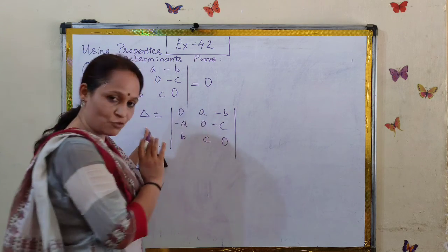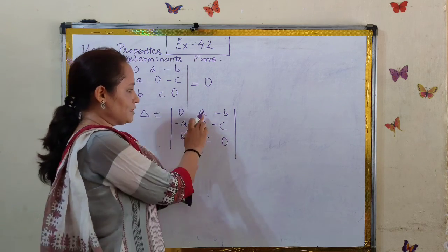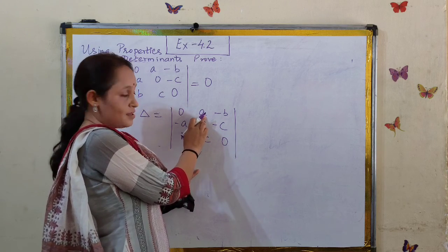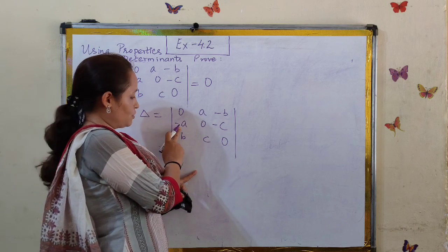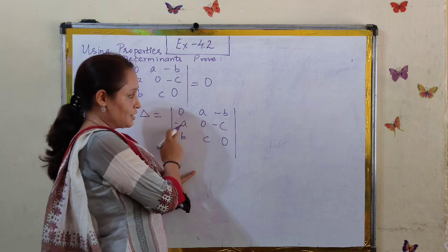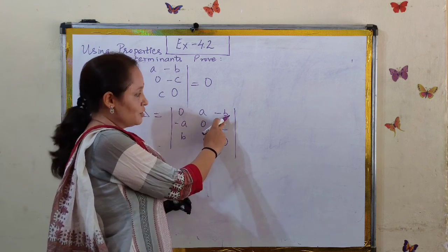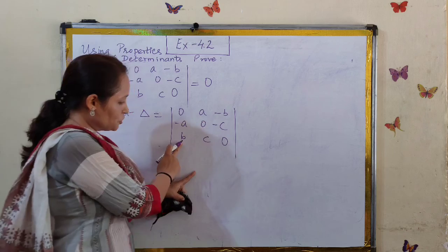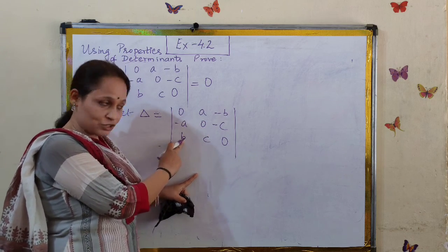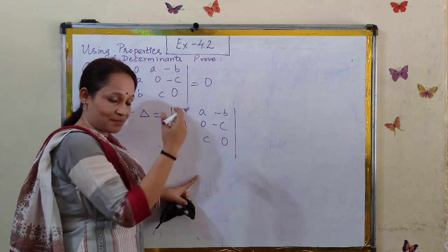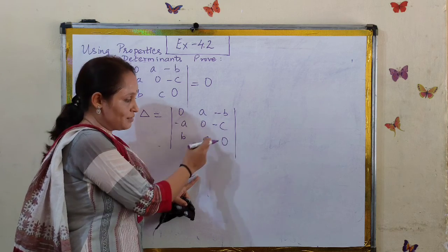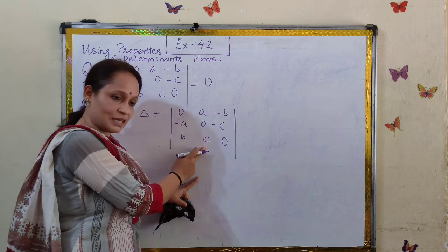And the non-diagonal entries, if you pay attention very carefully: the first row second column element is A, and the second row first column element is minus A — they are negative of each other. Similarly, first row third column element is minus B, and third row first column element is plus B — negative of each other again. The second row third column entry and the third row second column entry are also negative of each other.